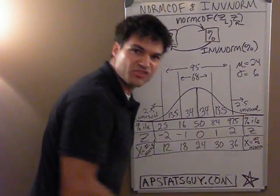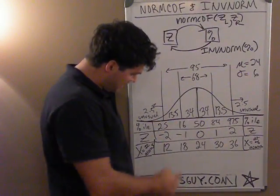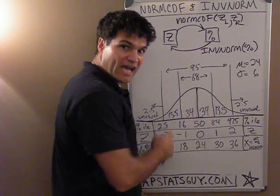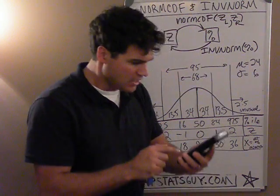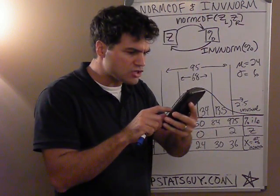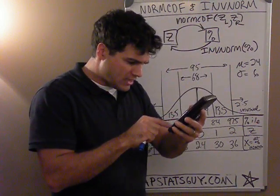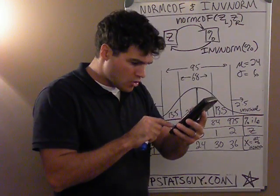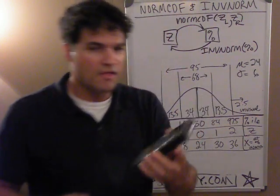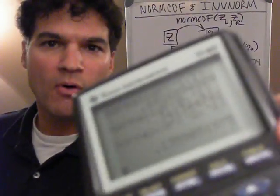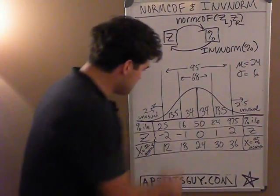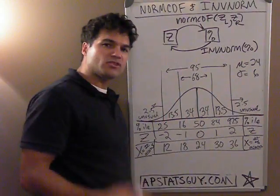I can put negative two and negative one in, and 13.5% should come out. Let's see — normcdf, second DISTR 2, negative two, comma, negative one — 13.5%! So it gives me the area between those two Z-scores. The input is a Z-score and the output is a percent.